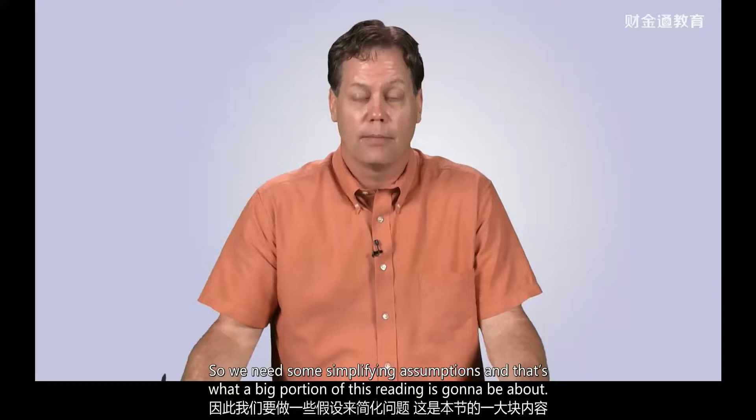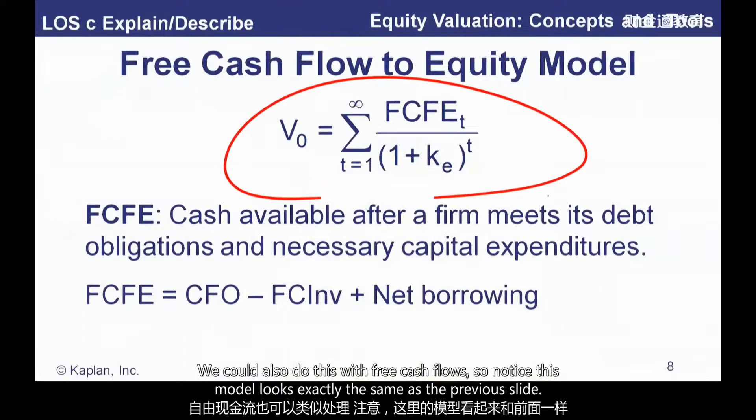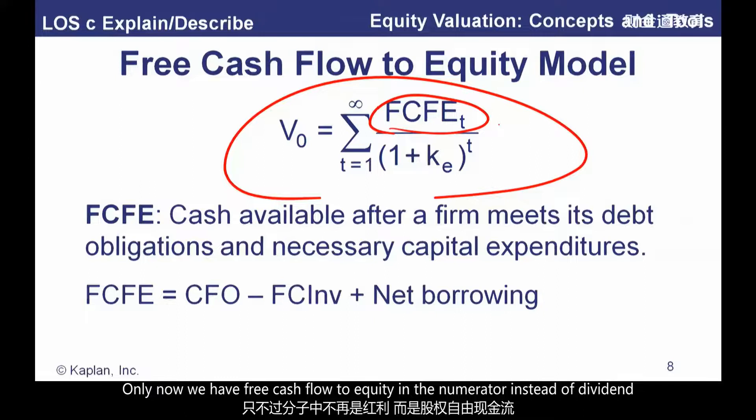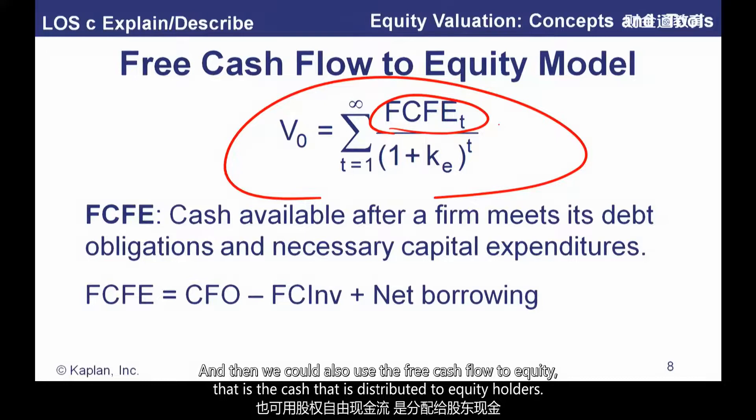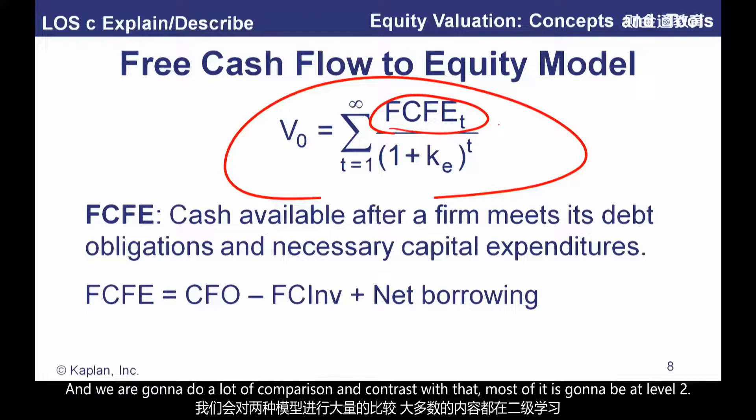We could also do this with free cash flow. This model looks exactly the same as the dividend model, only now we have free cash flow to equity in the numerator instead of dividends. So there are two possibilities for a valuation metric: one would be to use dividends — the cash actually distributed — and the other would be to use free cash flow to equity, which is the cash that is distributable to equity holders.